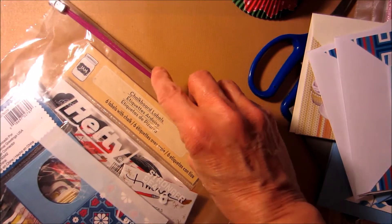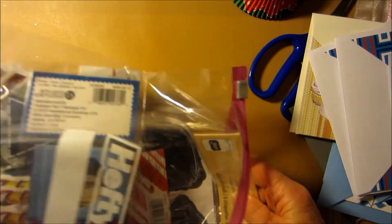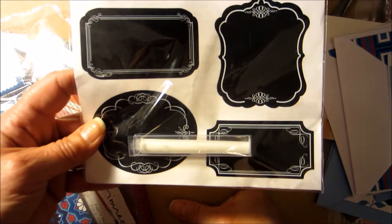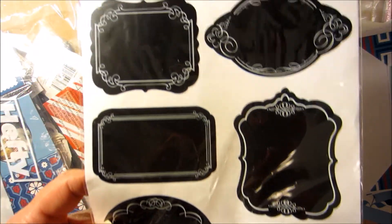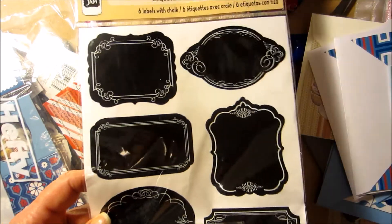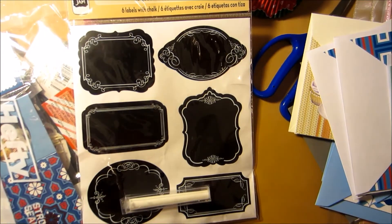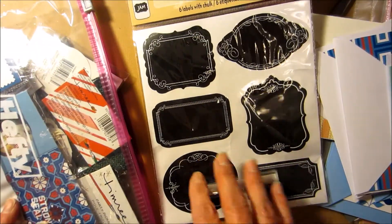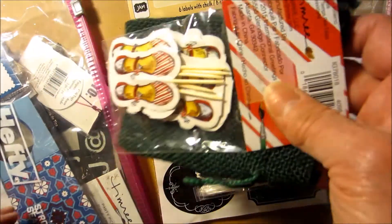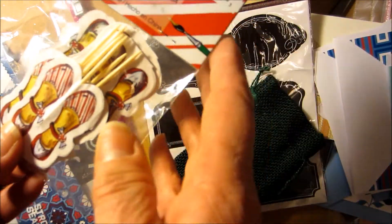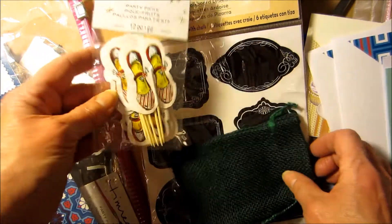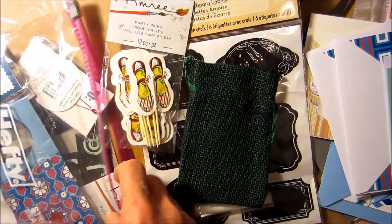Okay. And... Let's see. What else do we have in here? We have some... Oh, look at that. Chalkboard labels with the chalk. How cute. So you can actually... Hang on. Okay, I guess my battery's running low. So you can use them on jars or for crafting. Timree. Oh, those are cute.